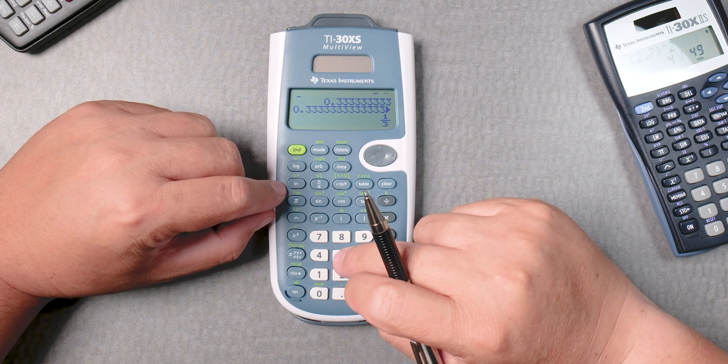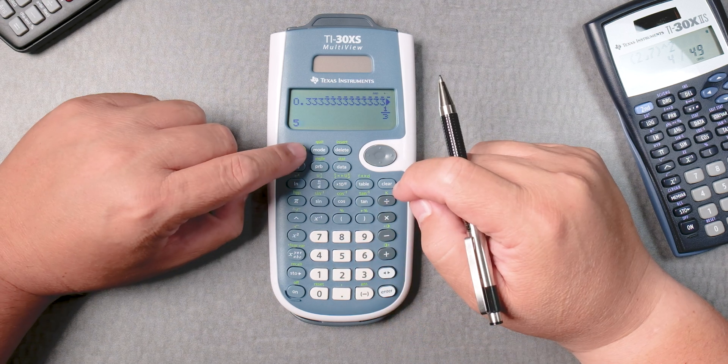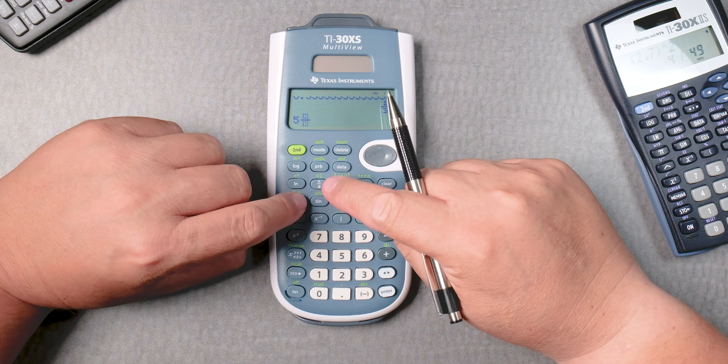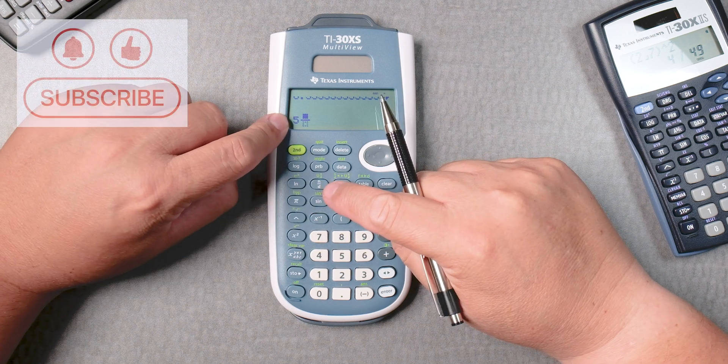You can do a mixed number like 5. And let's press this button, 2nd, n over d. So it gives you a mixed number.